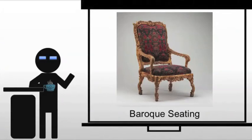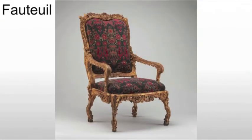In the Baroque, we will see several different forms of seating. We've been dealing with this evolution of chairs since the Egyptians, since we started this class, and I just want to continue it through the Baroque. We start with the fauteuil, which is a French chair — fauteuil basically means chair. It's fairly straightforward.